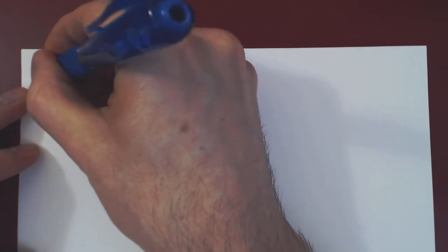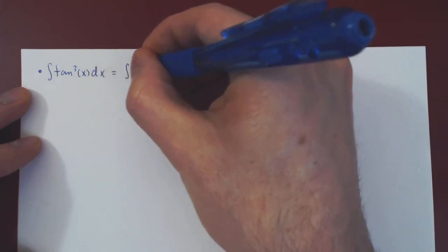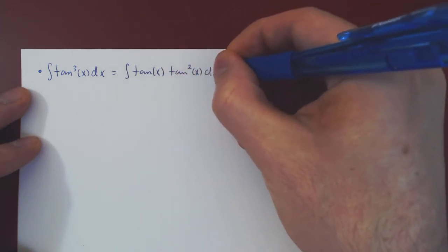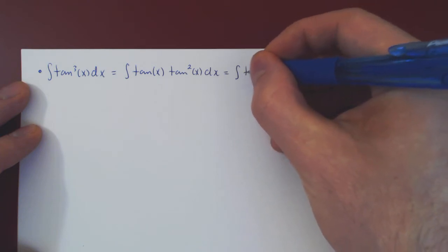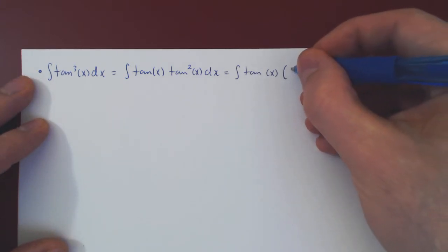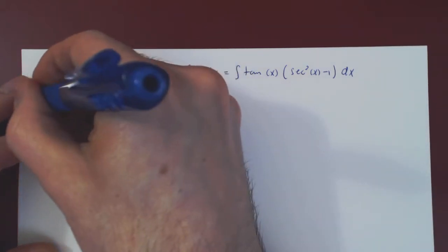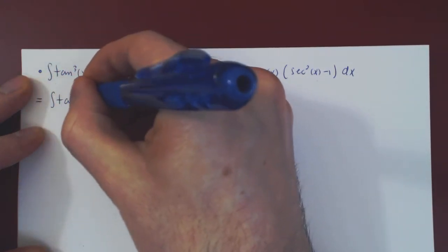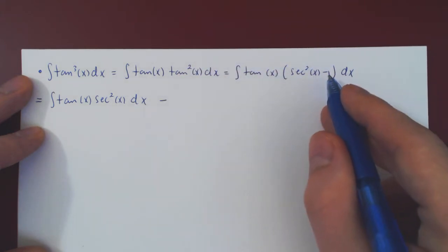What if we ask to integrate tangent cubed of x? The idea here is to rewrite this as the integral of tangent of x times tangent squared, and replace tangent squared by secant squared minus 1. Multiplying out, we separate the integral: the first will be the integral of tan(x) secant²(x) dx minus the integral of simply tan(x).